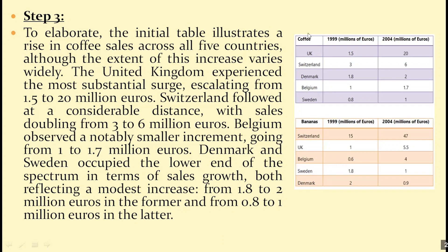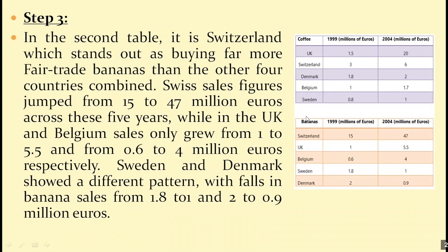That's body paragraph one, in which we talked about coffee. In the second table, it's Switzerland which stands out as buying far more fair trade bananas than the other four countries combined. Swiss sales figures jumped from 15 to 47 million euros across these five years, while in the UK and Belgium, sales only grew from 1 to 5.5 and from 0.6 to 4 million euros respectively. Sweden and Denmark showed a different pattern, with falls in banana sales from 1.8 to 1 and from 2 to 0.9 million euros.